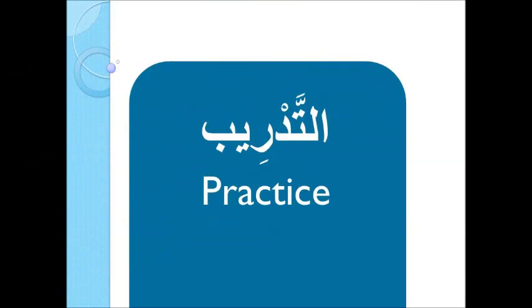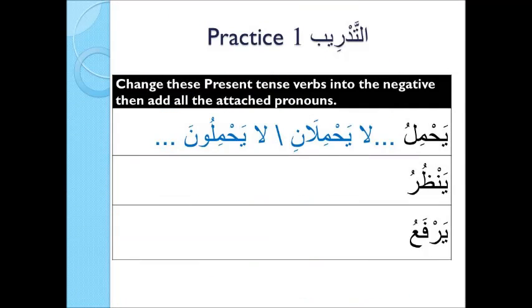التدريب الأول: Change these present tense verbs into the negative, then add all the attached pronouns. For example, يَحْمِلُ becomes لَا يَحْمِلُ، لَا يَحْمِلَانِ، لَا يَحْمِلُونَ — and continue adding the pronouns.